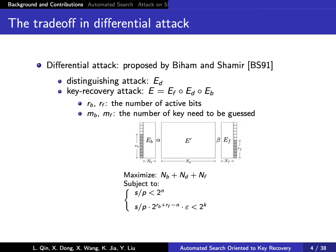In this talk, we try to maximize the number of attacked rounds with data complexity and time complexity lower than exhaustive search. The constraints we take into consideration include the probability of the distinguisher, the number of active bits of the input and output, and the number of key bits needed to be guessed in the extended rounds.